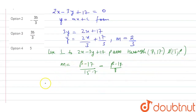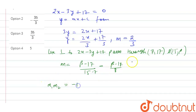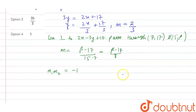So m is equal to — as we know, these two lines are perpendicular, so the product of their slopes will be -1. So m₁ × m₂ = -1, where m₁ = 2/3 and m₂ = (β - 17) / 8.